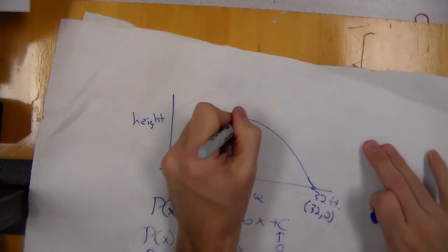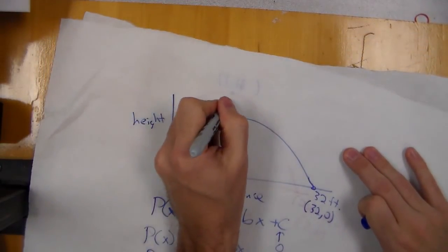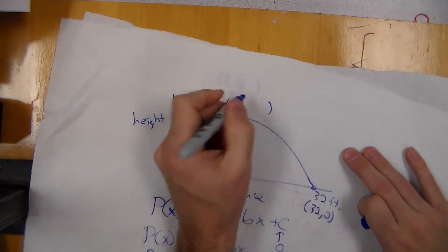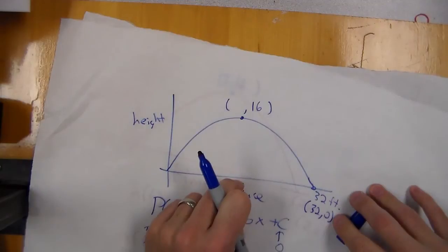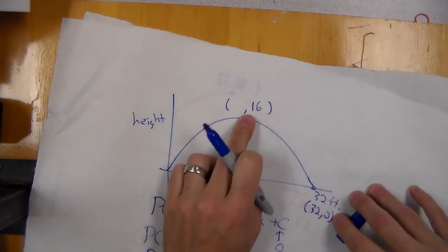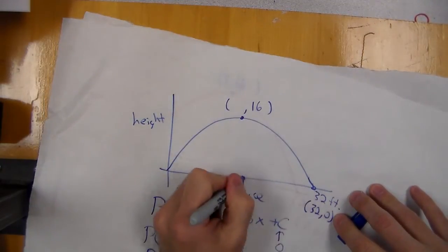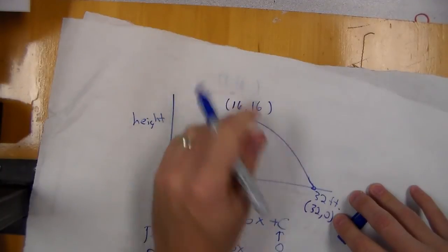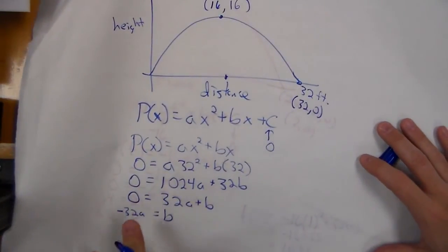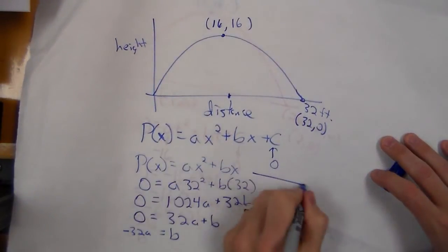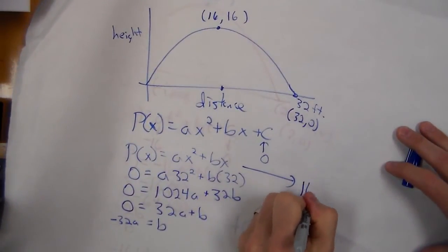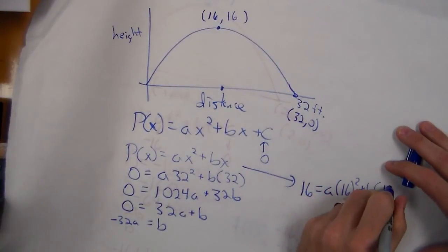That can come back to here. So I know 16 is my maximum height. The distance that it went when it reached a height of 16 is half of 32, which is also 16. So let's take those and plug this point in to solve. So now 16 = a(16)² + b(16).